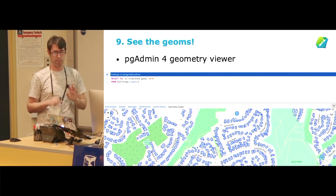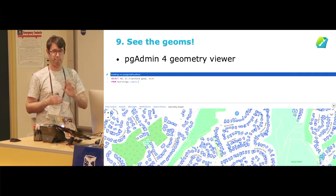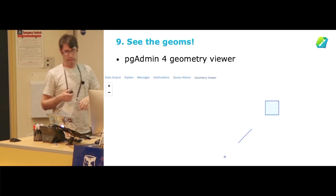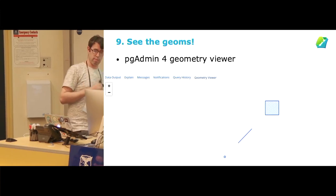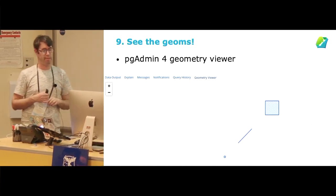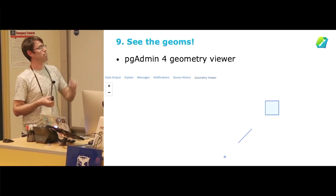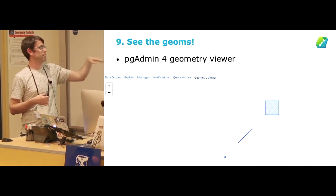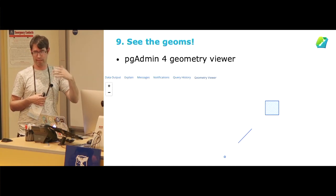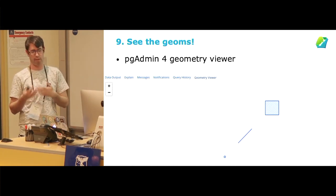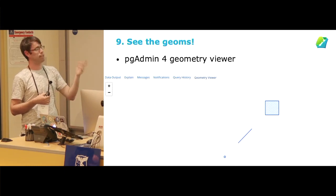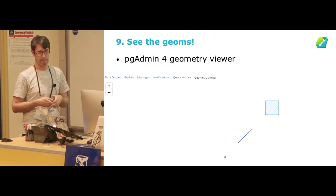And you can actually choose between five different maps to show in the background. The PGAdmin 4 geometry viewer also has the unique distinction of being able to show you that mixture of polygons, line strings, and points. So if you are debugging some intersection where you've returned polygons and line strings and you only wanted polygons, you can actually view it in there and see what's going on.